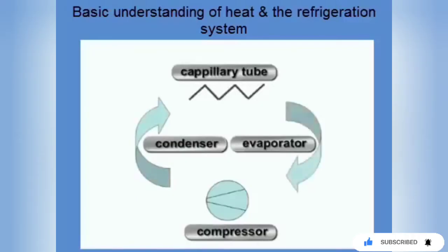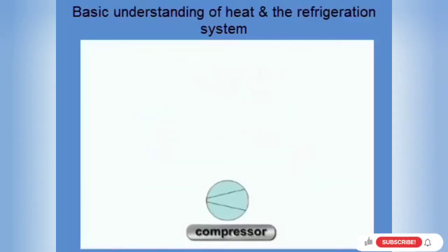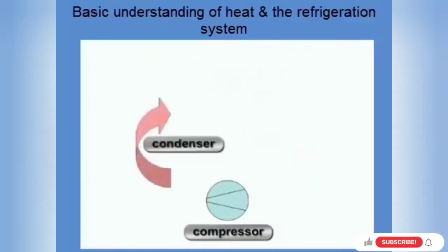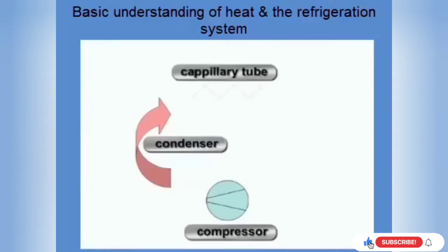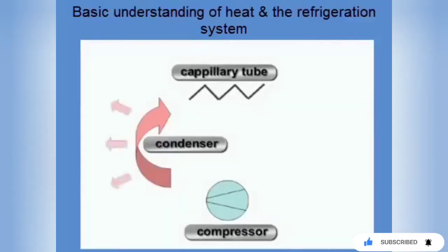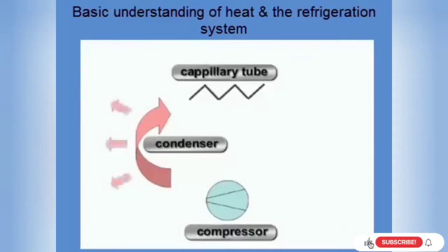The gaseous refrigerant is transported to the condenser and compressed to a higher pressure by a compressor. The capillary tube, which makes it possible to build up pressure, is at the end of the condenser. During the compression, heat is produced, which is transferred to the environment through the surface of the condenser.